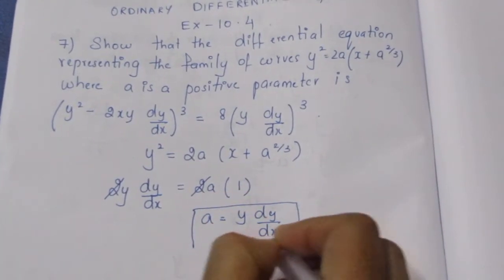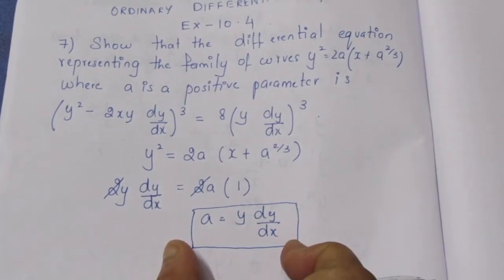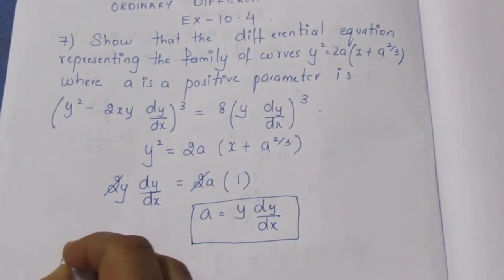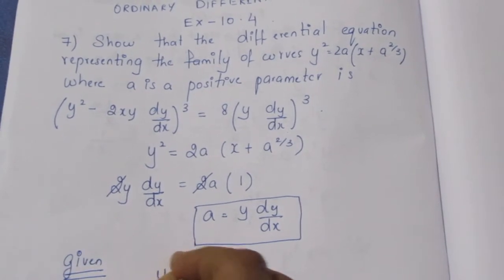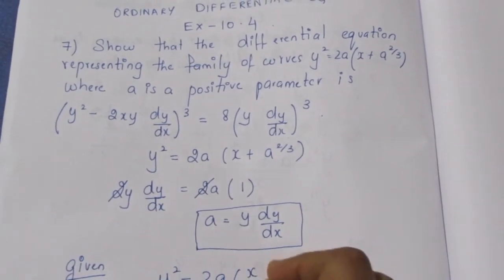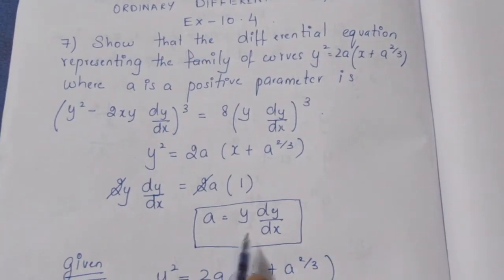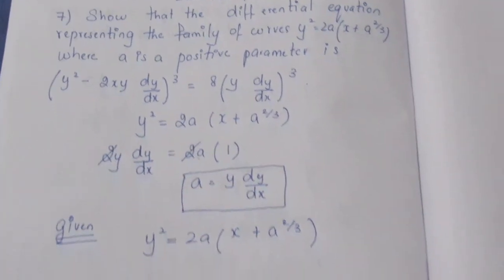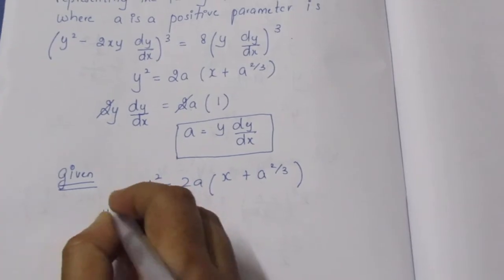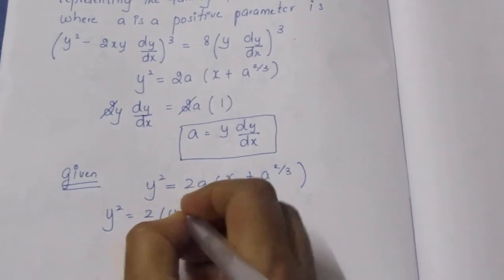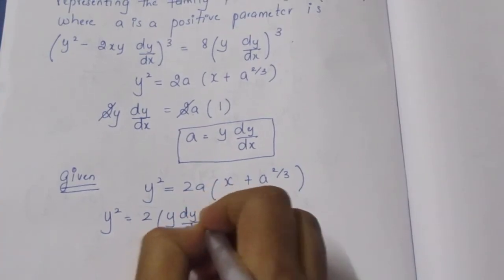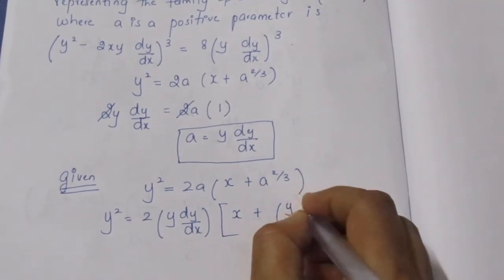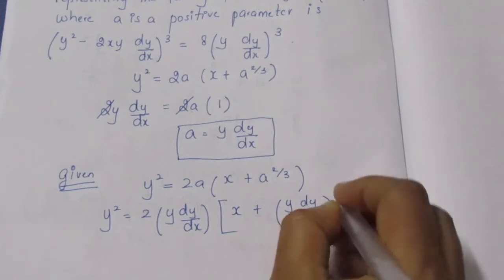Now following the method, a is equal to y·dy/dx. We substitute this value of a back into the original equation y² = 2a(x + a^(2/3)), so y² = 2(y·dy/dx) multiplied by x plus (y·dy/dx)^(2/3).